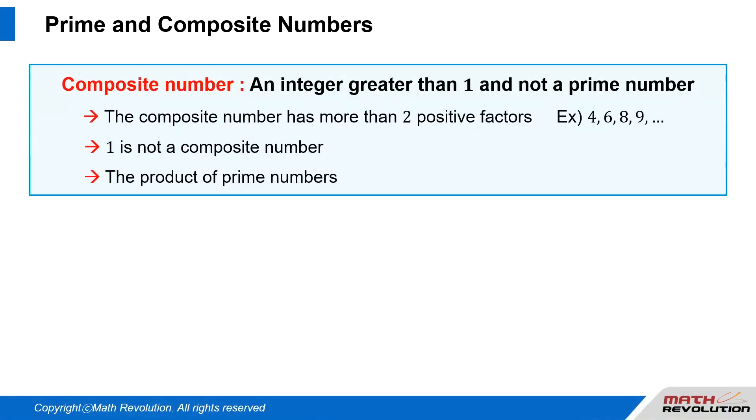A composite number is an integer greater than one that is not a prime number. The composite number has more than two positive factors. For example, 4, 6, 8, 9, and so on. One is not a composite number.